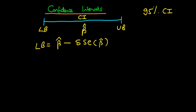The coefficient delta represents the 97.5th percentile of the T distribution. The T distribution here has N minus K degrees of freedom, where N is the number of observations and K is the number of independent variables in our model including the constant. That's how we work out the lower bound.